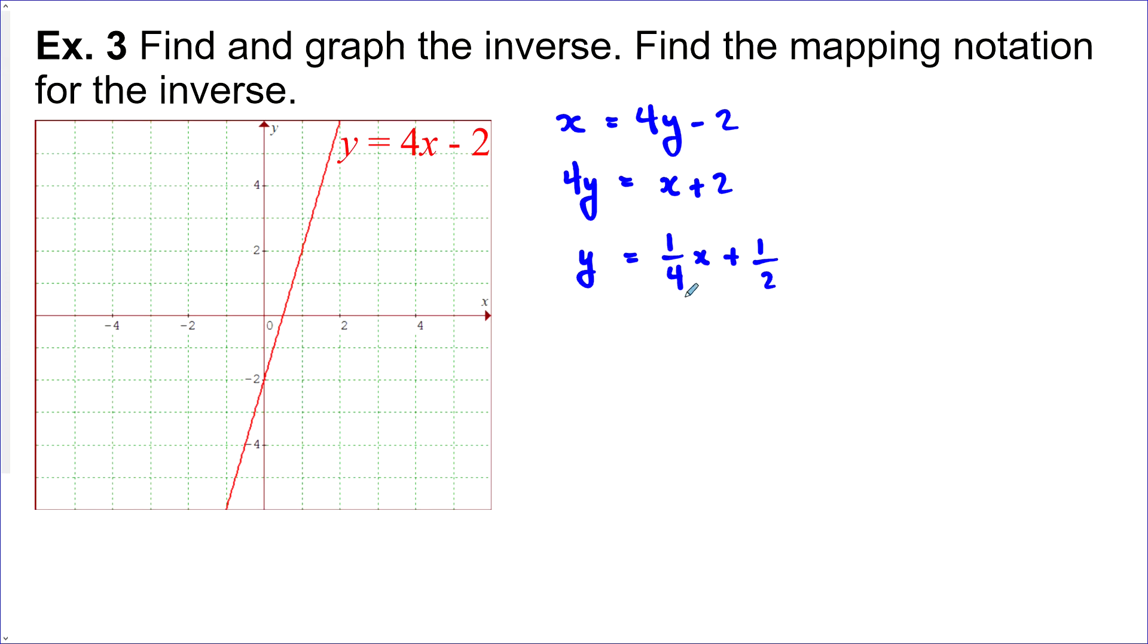So there's a nice equation in slope y-intercept form. Let's graph it. Looks like we've got a y-intercept of 1 half and a slope of 1 quarter, which means we go up 1 and over 4. So up 1 and over 1, 2, 3, 4. And now we can try to draw a line through that.